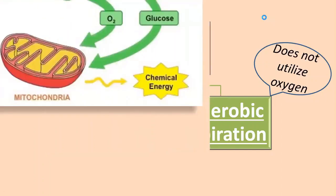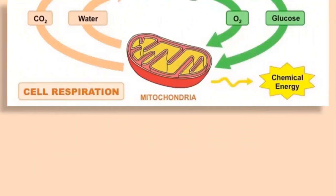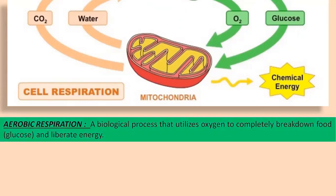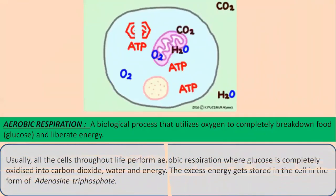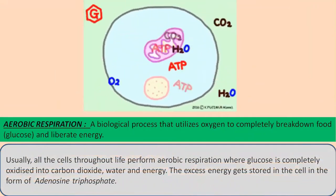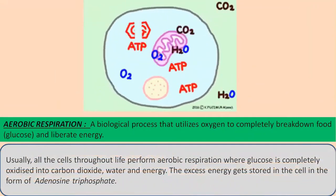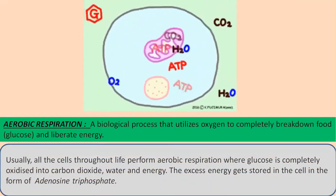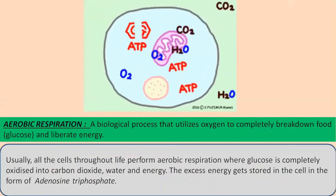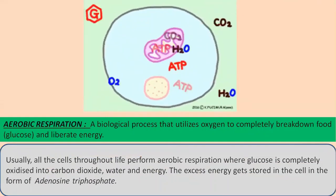Let us first discuss aerobic respiration. Aerobic respiration is a process or set of reactions that takes place in the mitochondria of each and every cell in the presence of oxygen. It is a biological process that utilizes oxygen to completely break down glucose and liberate energy. Usually all cells throughout their life perform aerobic respiration where glucose is completely oxidized into carbon dioxide, water, and energy. The excess energy gets stored in the cell in the form of adenosine triphosphate, or ATP.